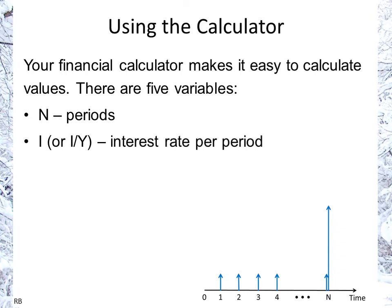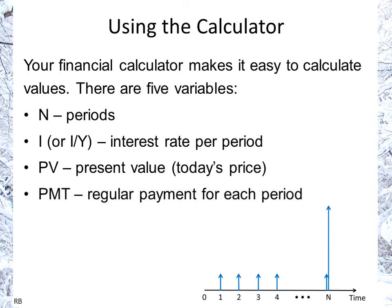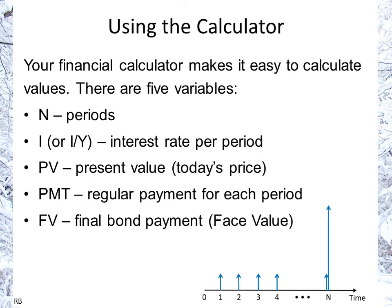On the BA2+ Texas Instruments calculator, I/Y is the button for the interest rate per period — again, the period is not always a year. PV is the present value, which is today's price of the bond. PMT is the regular payment for each period, where we use the coupon rate. And FV is the final bond payment — the face value or par value.